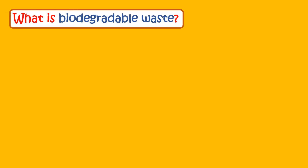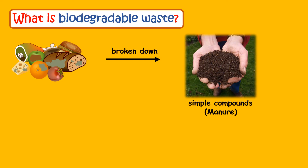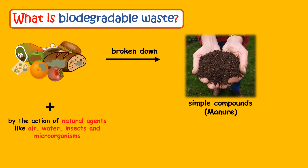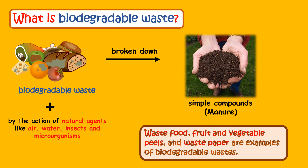What is biodegradable waste? The waste which can be broken down into simple compounds when left under the soil by the action of natural agents like air, water, insects, and microorganisms within a short period of time is known as biodegradable waste. Waste food, fruit and vegetable peels, and waste paper are examples of biodegradable waste.